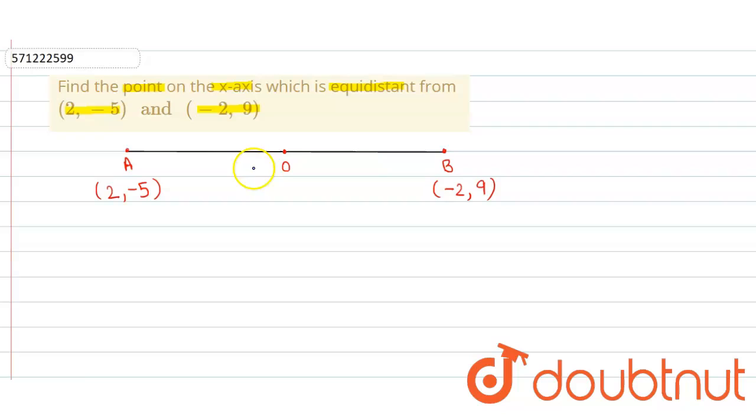So first we assume that point to be (x, 0), because since the point is on the x-axis, its y-coordinate will be 0.